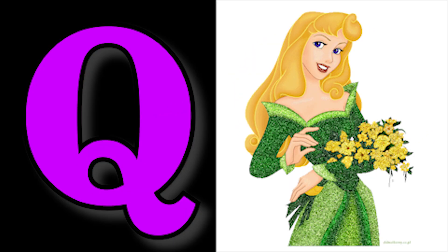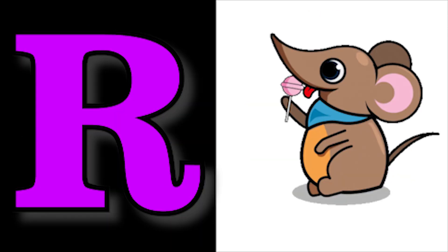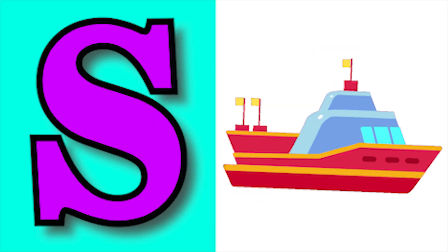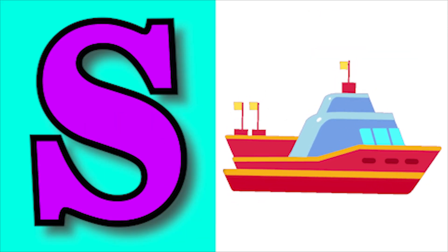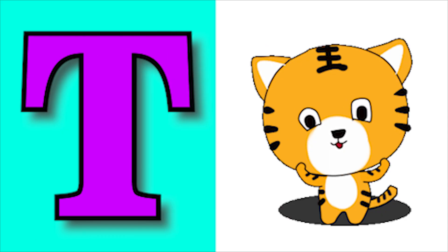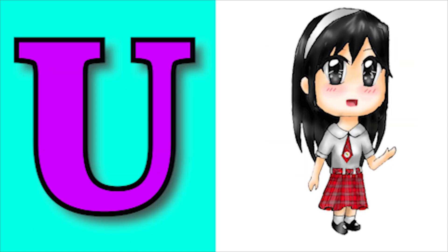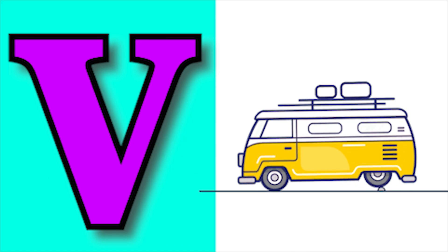Q for queen, R for rat, S for sheep, D for tiger, U for uniform, B for van.